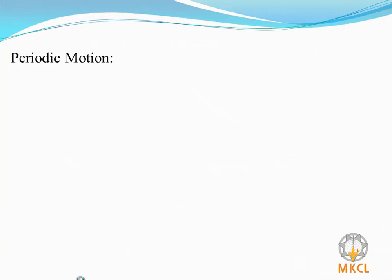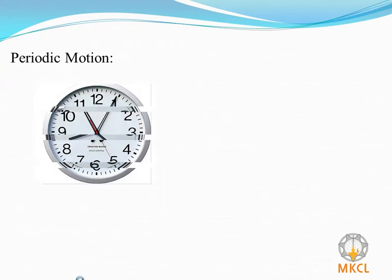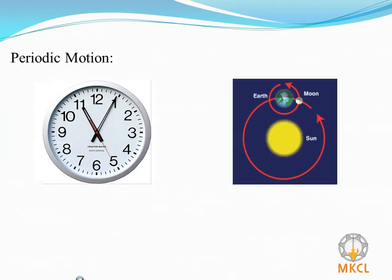What is a periodic motion? Let us see some examples. Motion of a clock hands, motion of the earth around the sun, or a motion of the moon around earth.